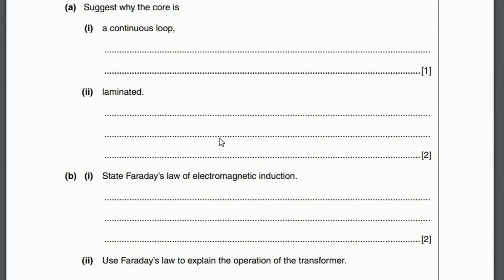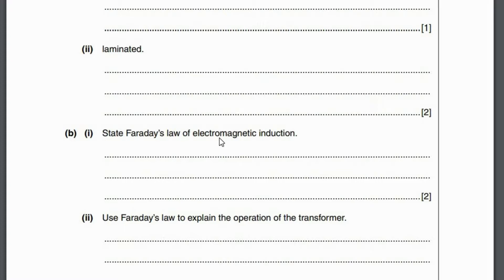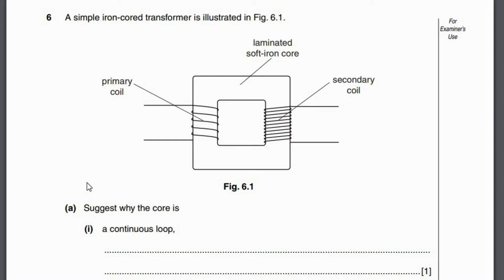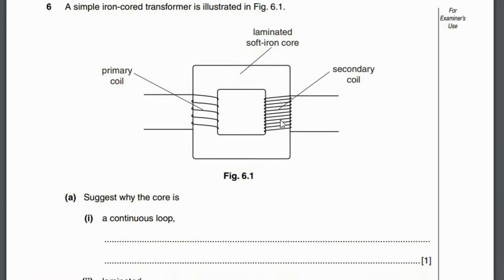State Faraday's law of electromagnetic induction: induced EMF is proportional to the rate of change of magnetic flux linkage. Use Faraday's law to explain the operation of a transformer: an alternating current in the primary coil causes a changing magnetic flux in the iron core. This flux passes through the secondary coil, and the changing flux linkage induces an EMF in the secondary coil.